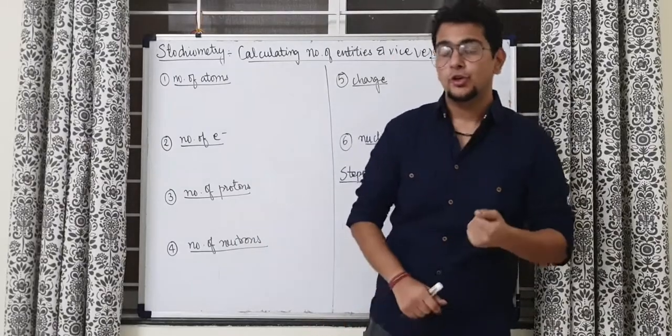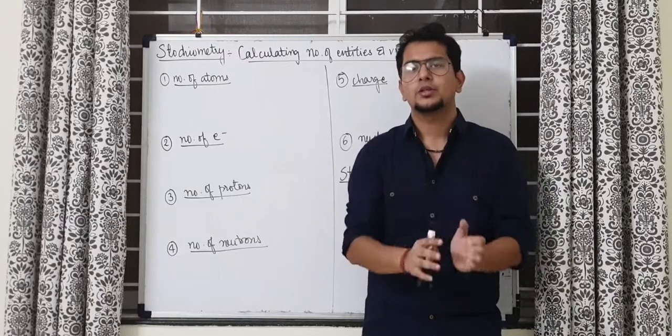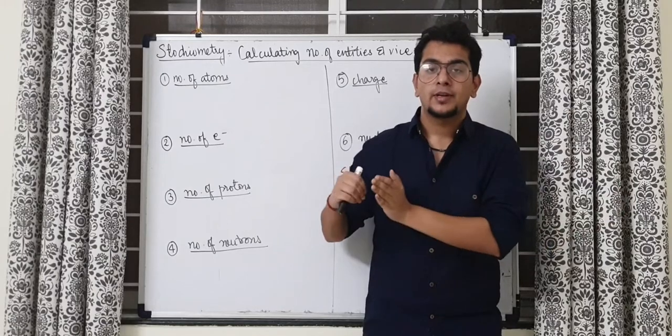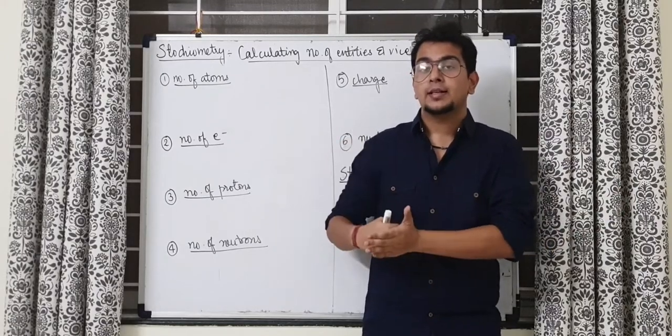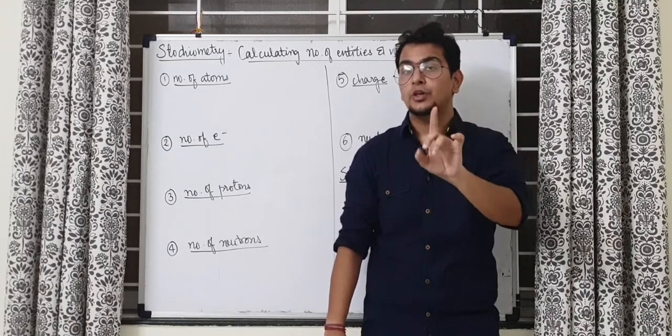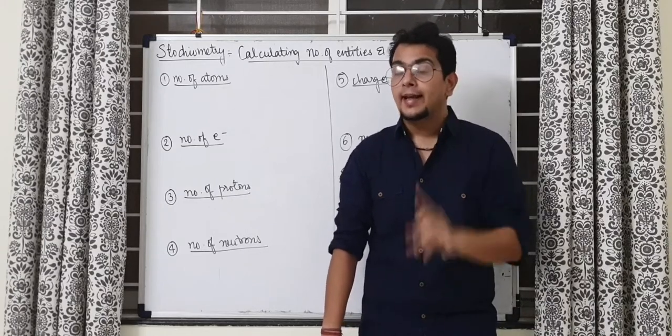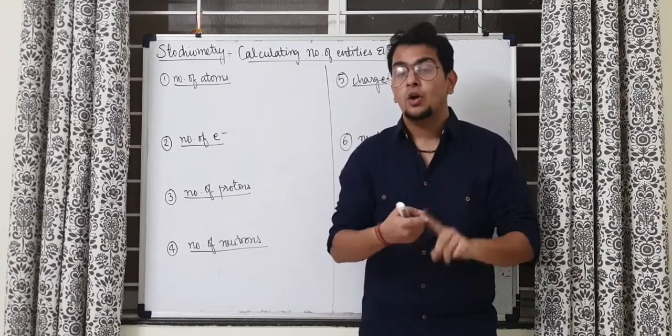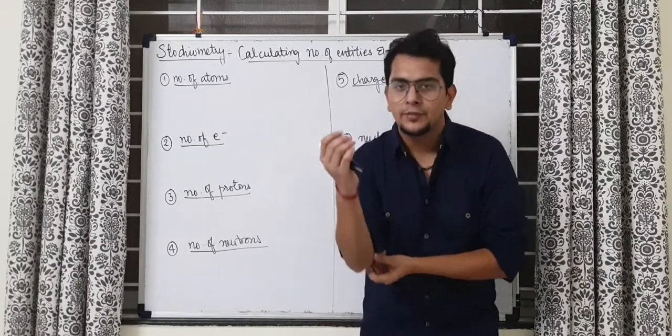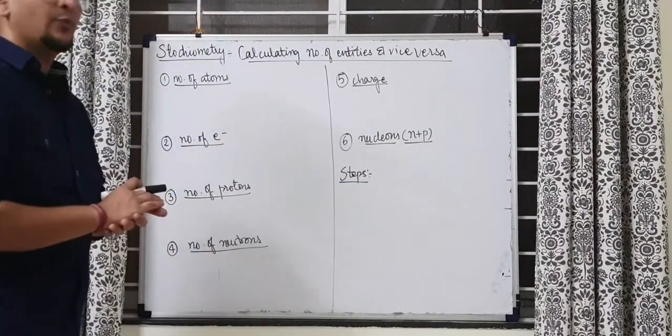So in the first part of the video we learnt how to convert mass into moles, moles into number, number into moles, moles into mass, moles into volume of gas at STP, and volume of gas at STP to moles. Keeping in mind volume of gas at STP only we have to divide by 22.4 liter or multiply by 22.4 liter. We should never use that formula for liquid or a gas without STP condition. Now, in this segment of the video, I am going to tell you a very important class of question that is calculating the number of entities and vice versa.